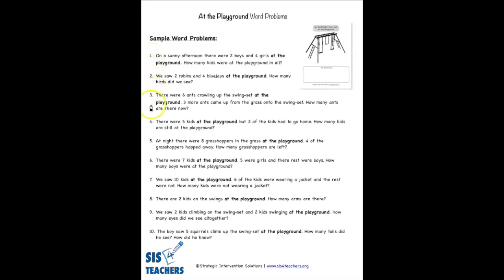Problems one, two, and three on the sample story problems are all part-whole addition samples — giving you a part and a part and a total, and students act it out on the mat. Numbers four and five are great problems for subtraction: you're given a total, part of that total disappears in some way, and students figure out how many are left. Numbers six and seven are great for missing addend: a total and a part are given, but the child has to figure out the other part.